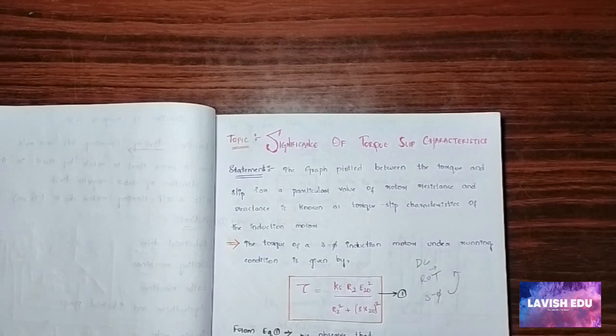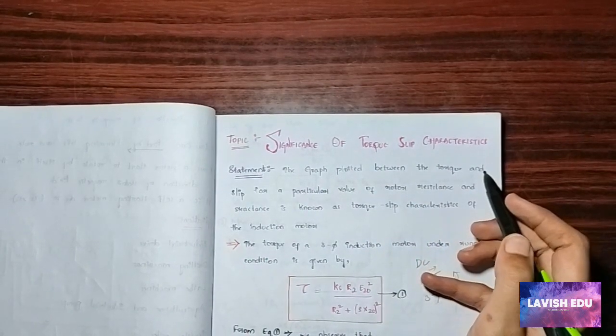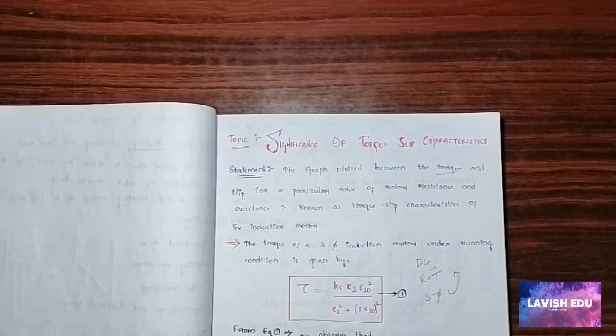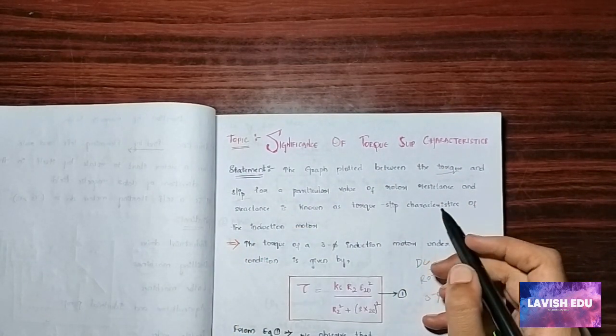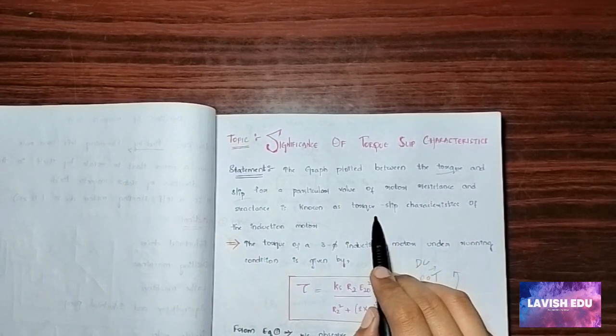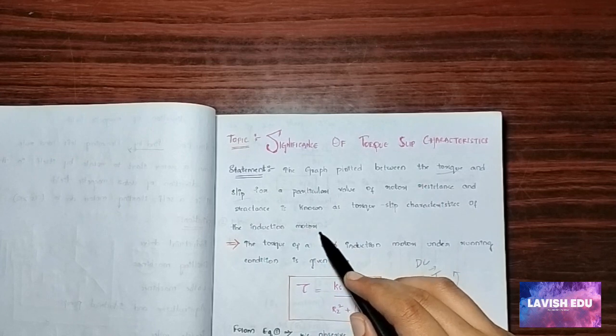So what is the statement? What is meant by torque-slip characteristics is the graph which is plotted between the torque and the slip for a particular value of rotor resistance and rate reactance, known as the characteristics of the induction motor.